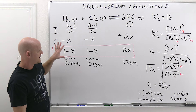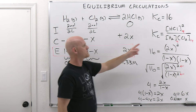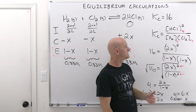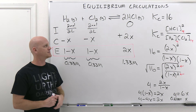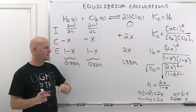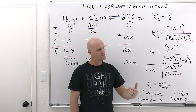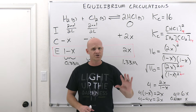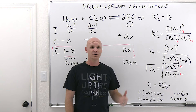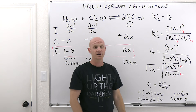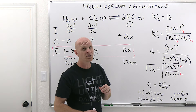So for H2: 1 minus 0.67 comes out to 0.33 molar. Same for Cl2 — 0.33 molar. And 2 times 0.67 — notice 0.67 is 2 thirds, so this should be 4 thirds, which is about 1.33 molar, or using the exact number, 1.34 molar. One thing you can do is go back and plug these numerical values right back into the Kc expression, and it will equal 16. That's a quick check: did I do this right? Yes. The big thing here is that we had a perfect square in the numerator and denominator and we avoided the quadratic.